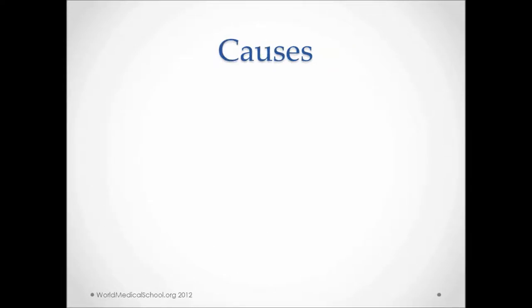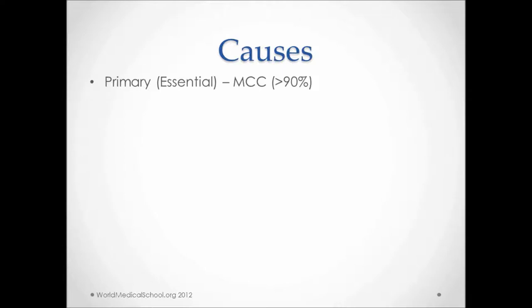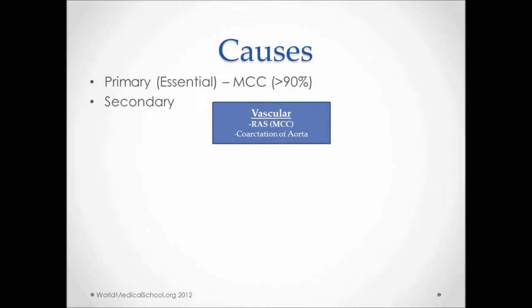There are a lot of things that can cause increased blood pressure. The most common cause is primary or essential hypertension, which basically means we do not know what is causing the hypertension. So if I were to ask you, what is the most common cause of hypertension in the USA? Your answer would be essential hypertension — and so on and so forth. There are a number of secondary causes of hypertension, so let's group them into different categories for easy understanding and recall.